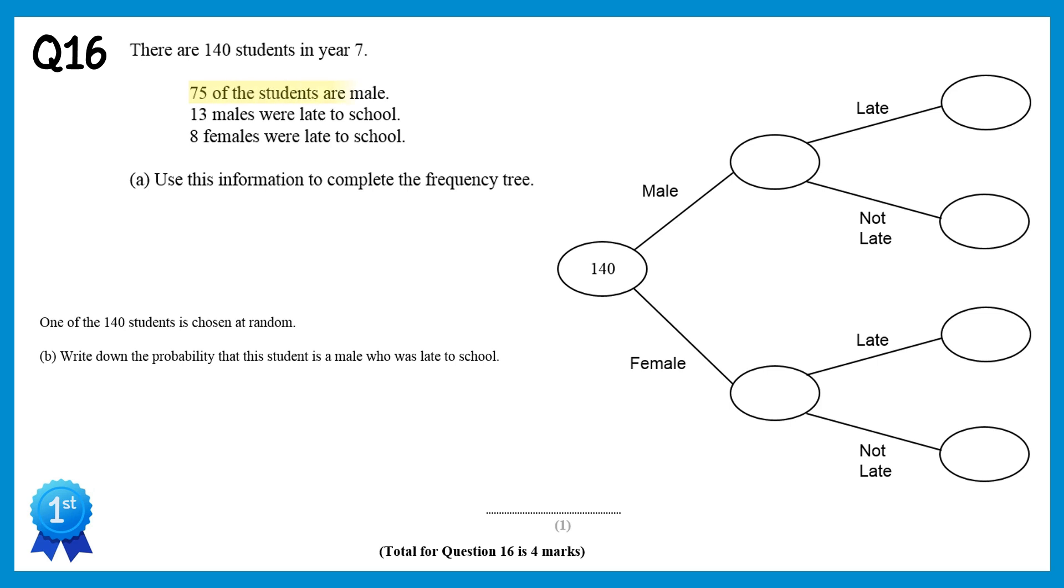We are told that 75 students are male, so we can write that straight into the frequency tree. To work out the number of females, we'll do the total people take away the males, so 140 take 75, gives you 65. We're also told that 13 males were late to school, so we can write that straight in. To work out the males that were not late, we'll do the males, which is 75, take away those that were late 13, which gives you 62.